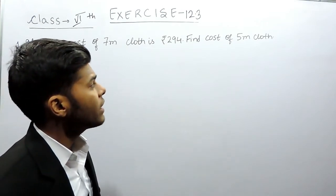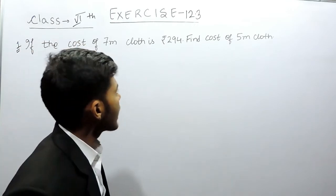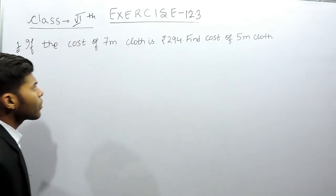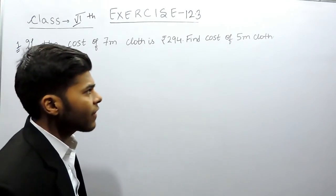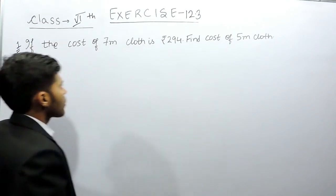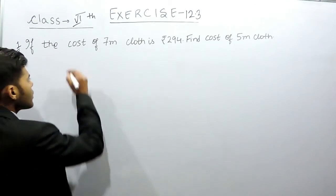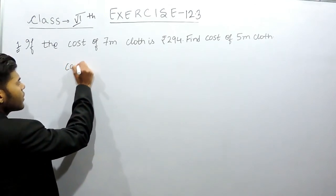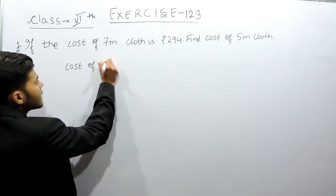Now what we'll do is first of all we'll find the cost of 1 meter cloth that will be equals to 294 by 7, and then we'll multiply it with 5 to find the cost of 5 meter cloth.